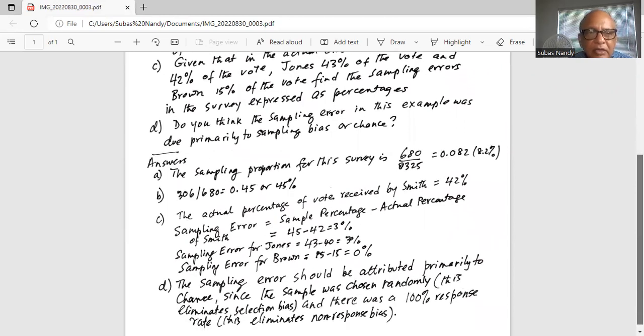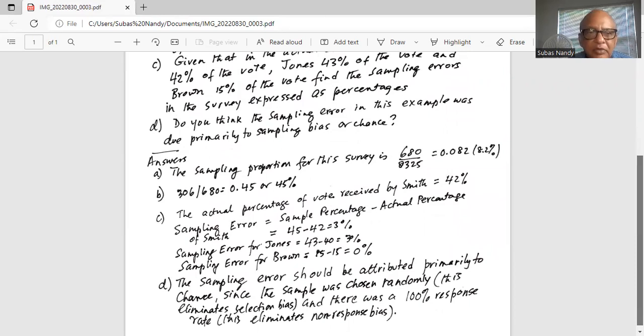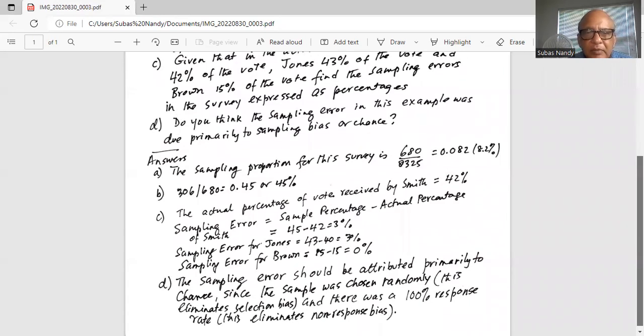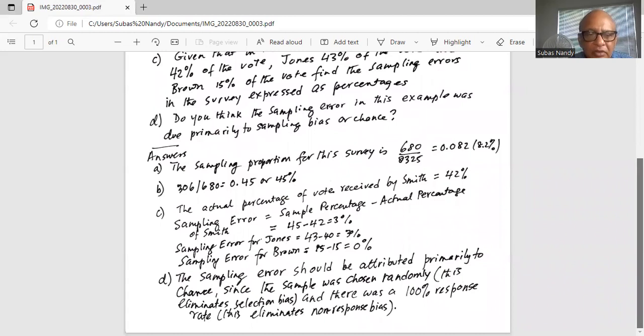Part D: do you think the sampling error in this example was due primarily to sampling bias or chance? The sampling error should be attributed primarily to chance. It's a random event. Since the sample was chosen randomly, this eliminates selection bias, and there was a 100 percent response rate. This eliminates non-response bias. So those two biases are not present, and the sampling error is primarily due to chance.